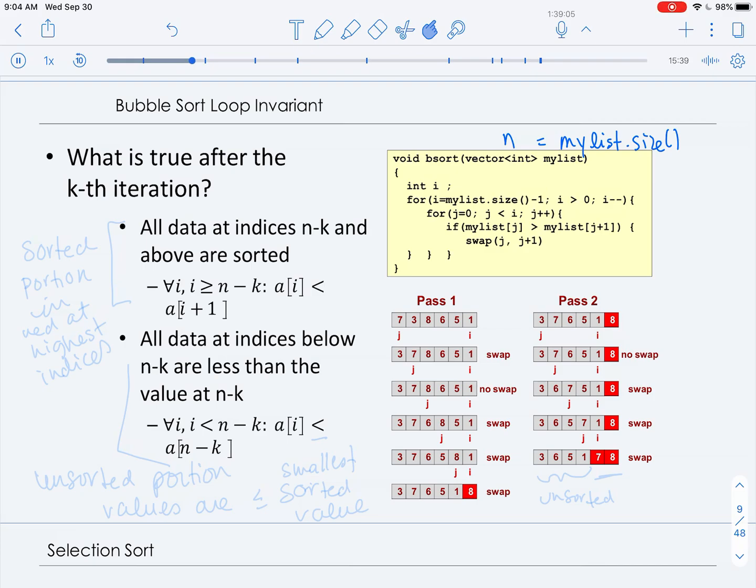But basically what the loop invariants are saying is that everything at the index n minus k is sorted. And everything at indices less than that are strictly smaller than the sorted value. But we can't say if there's an ordering on them precisely. And just let's look at 2, if k is equal to 2, then we know that everything at index n minus 2 or greater is sorted. As we can see here, we have 7 and 8 in red, so they're sorted. And everything that is still gray, so everything at indices less than n minus 2, you can see the entire gray area, it's unsorted. And all of the values are strictly less than the sorted portion.